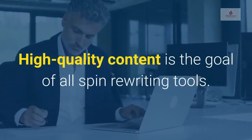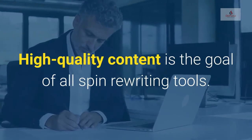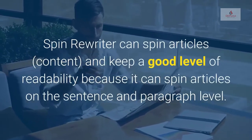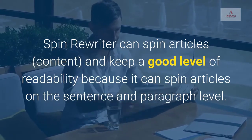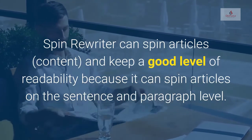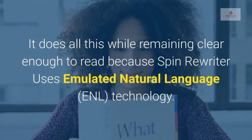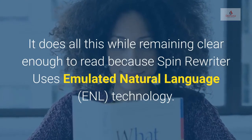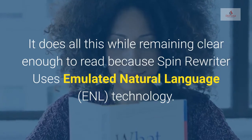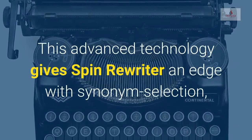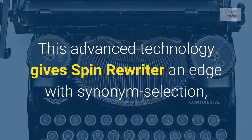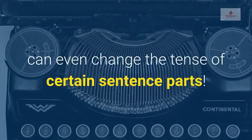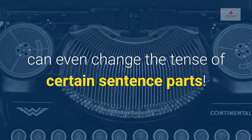High-quality content is the goal of all Spin Rewriting tools. Spin Rewriter can spin article content and keep a good level of readability because it can spin articles on the sentence and paragraph level. It does all this while remaining clear enough to read, because Spin Rewriter uses emulated natural language technology. This advanced technology gives Spin Rewriter an edge with synonym selection, making the end-result quality website content. It can even change the tense of certain sentence parts.